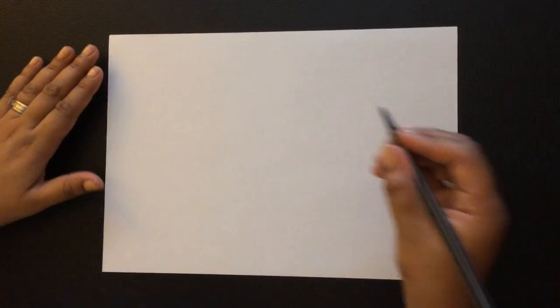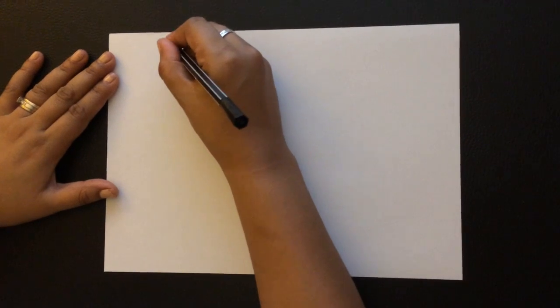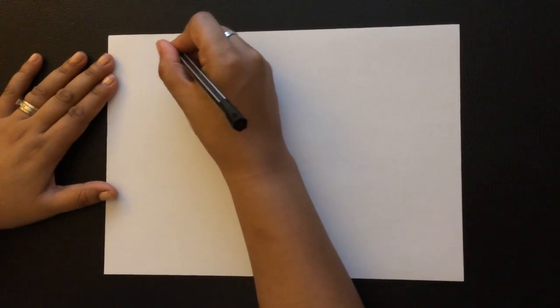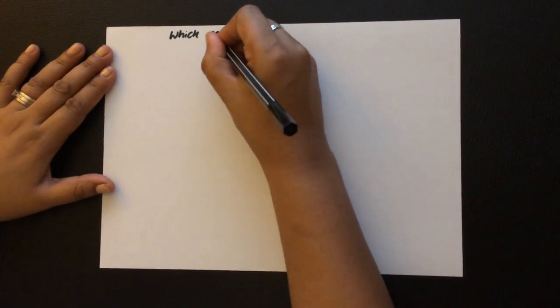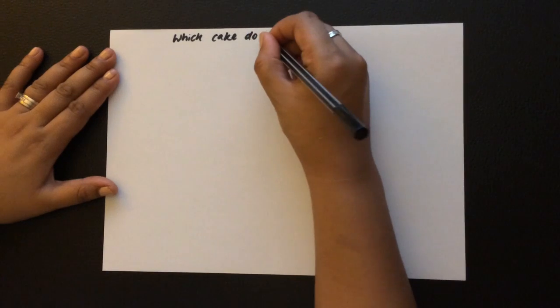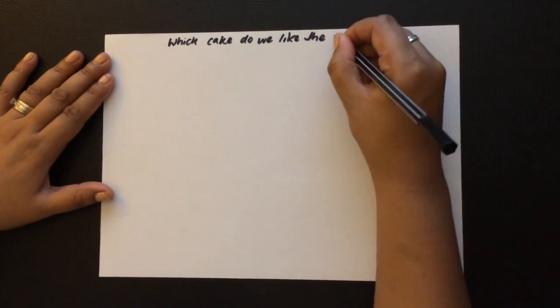So what we first need to do is have a title for the bar graph. In this case we are going to call it which cake do we like the most. Just like a story, we just put a name on the top.